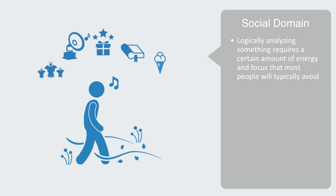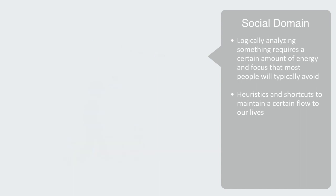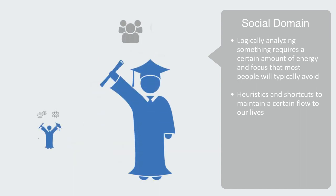We use all sorts of heuristics and shortcuts to maintain a certain flow to our lives. In the US, only about 15% of graduates are in the technical STEM areas of math, science, engineering, and technology. In short, most people aren't engineers or computer geeks — they just want to get on with pursuing their interests. The last thing they want to do is have to read and follow each step in the instruction manual.